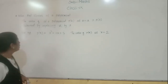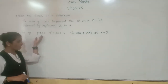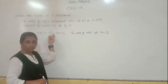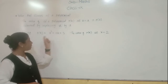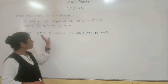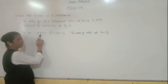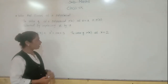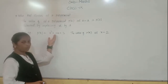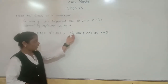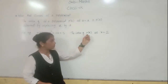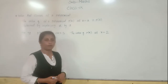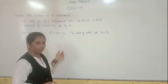For example, suppose P of X equals to X squared plus 2X plus 3. This is our polynomial, and we represent it by P of X because the variable used is X. So P of X equals to X squared plus 2X plus 3. We have to find the value of P of X at X equals to 2. What will be the value of P of X at X equals to 2?